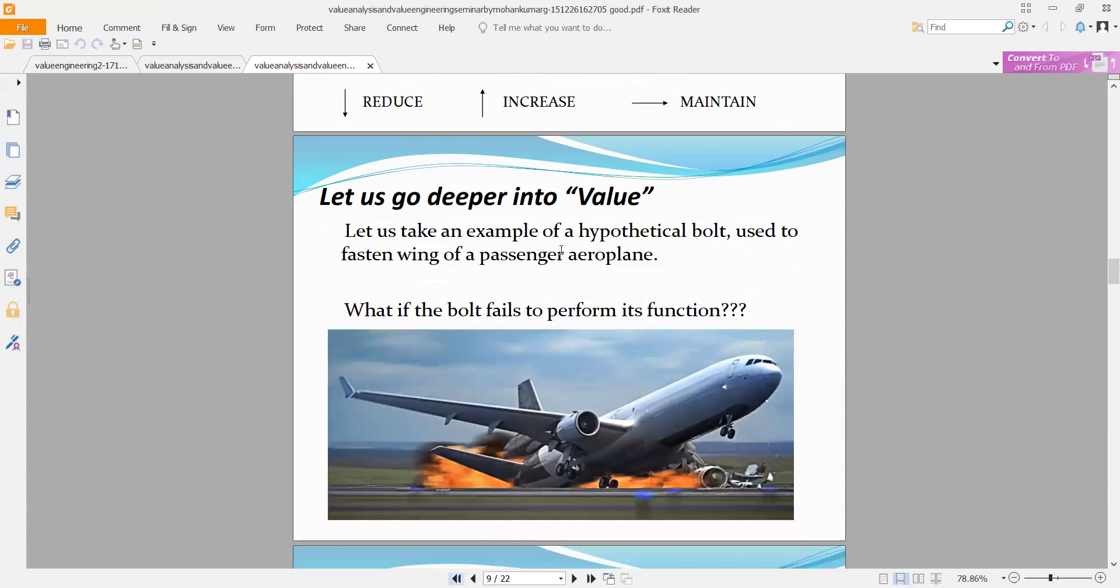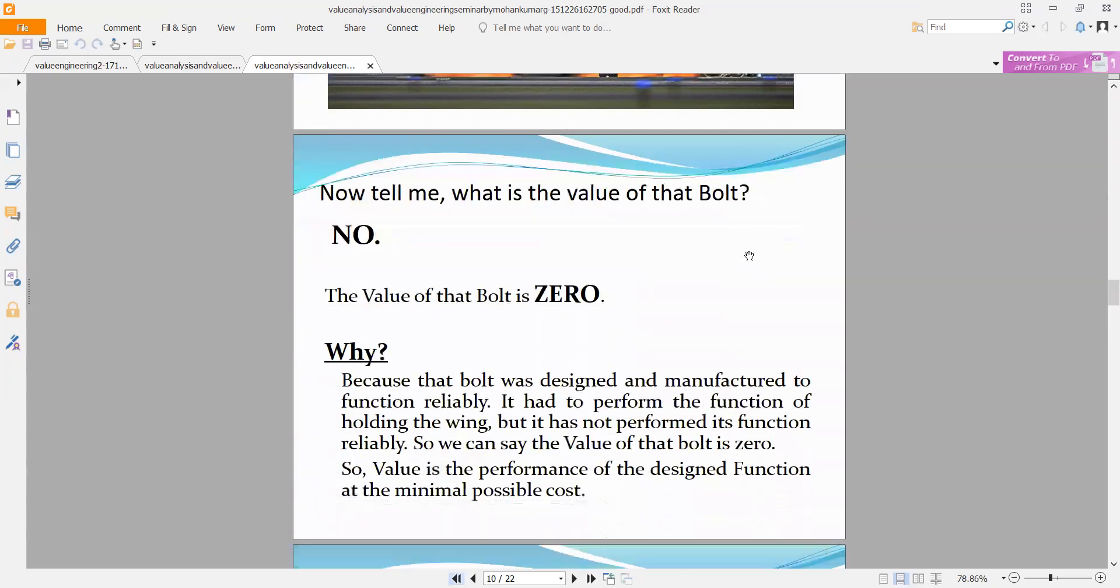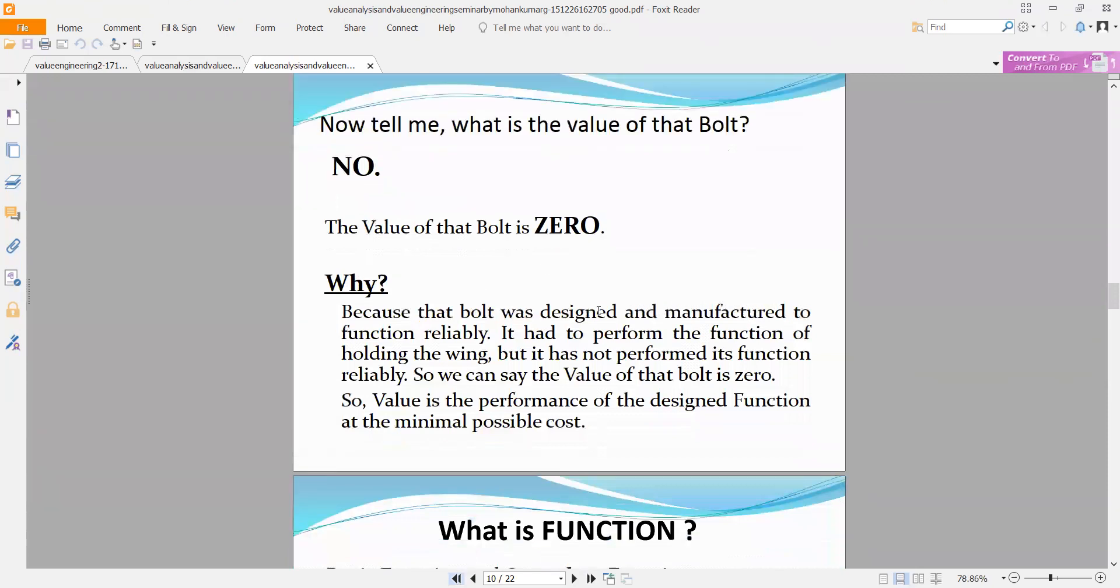For example, let's say a bolt - you put it in an airplane to fasten the wing. But what if the bolt cannot function or fails? The whole airplane will crash just because of the bolt. The bolt has no value, it creates zero or negative value. Why? Because the bolt was designed to perform the function of holding the wing. If it cannot perform the function, the value becomes zero.